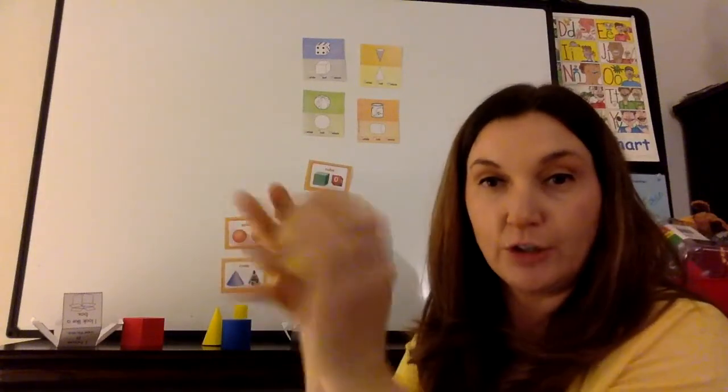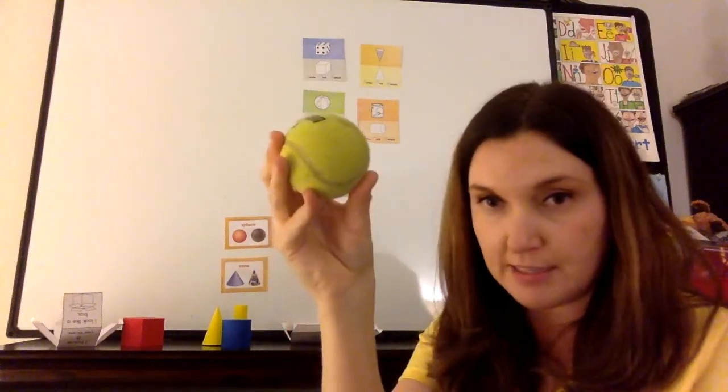A sphere is curved. We're not going to be able to count any vertices. There's no points. We're not going to have faces on this object. This is a sphere.